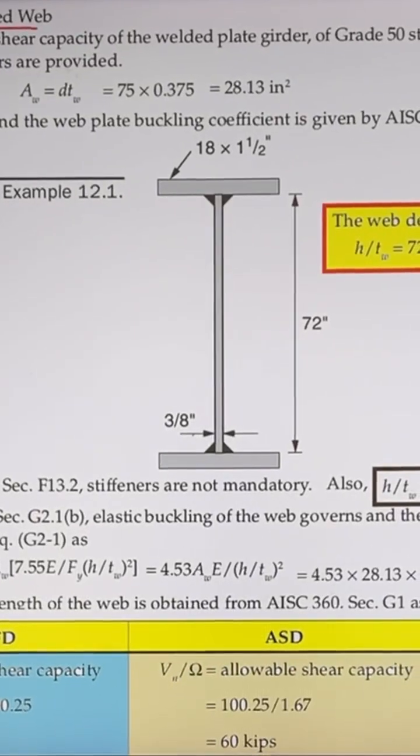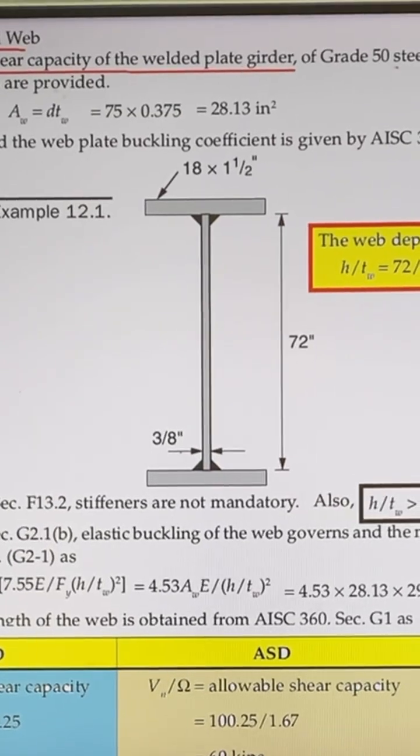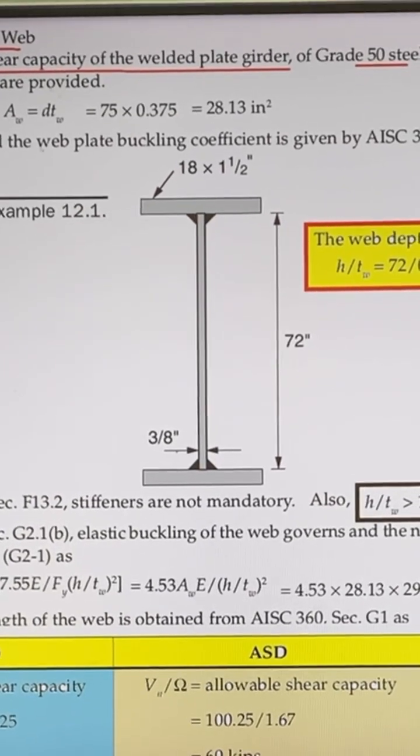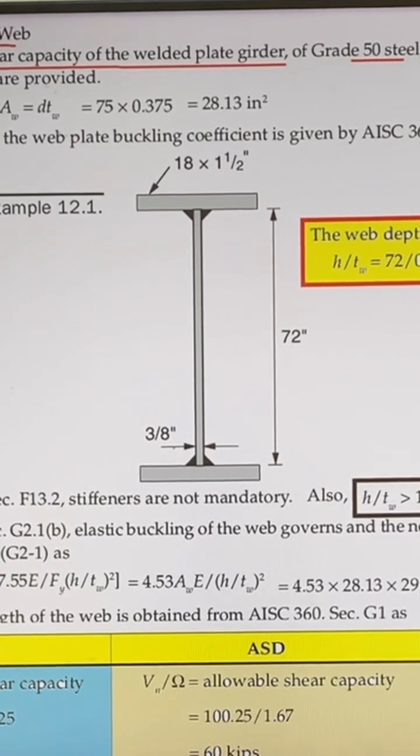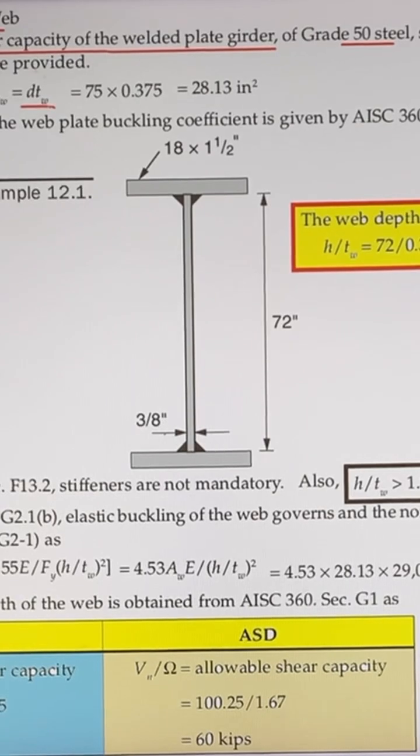This is an unstiffened web. We are going to determine the available shear capacity of the welded plate girder of Grade 50 steel. The area of the web is the total depth times the thickness of the web.